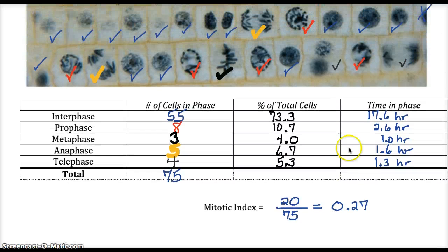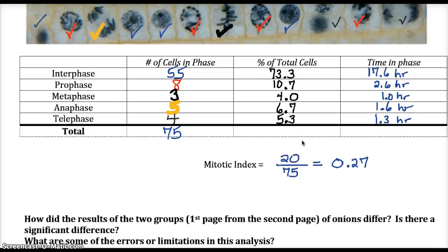Back to time and phase. How did I find this time and phase? I took, again, the idea that if I have 73.3% of total cells in interphase, then 73.3% of the time in a day, they're in that phase. So I just took this percentage times 24 again like I did the other sheet.